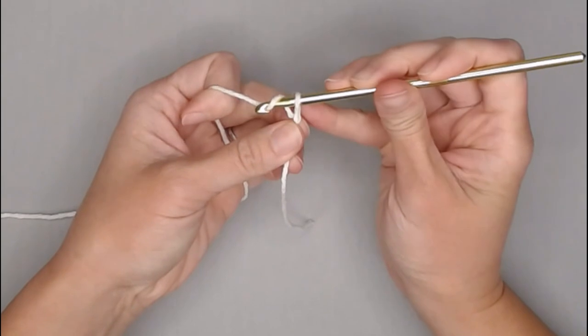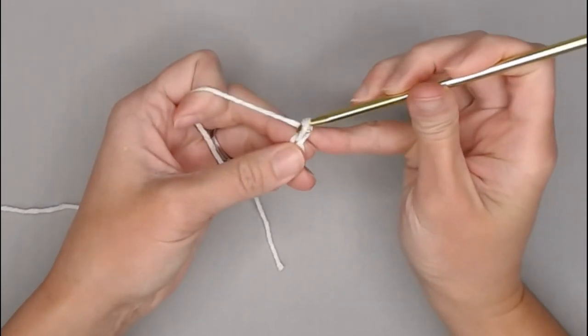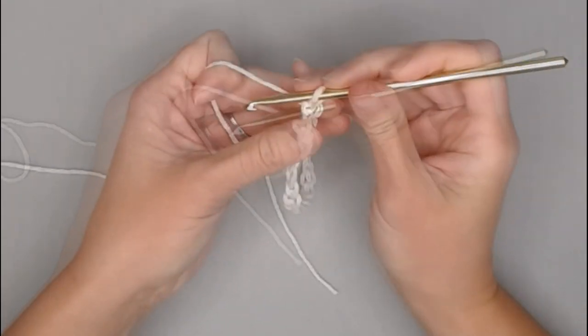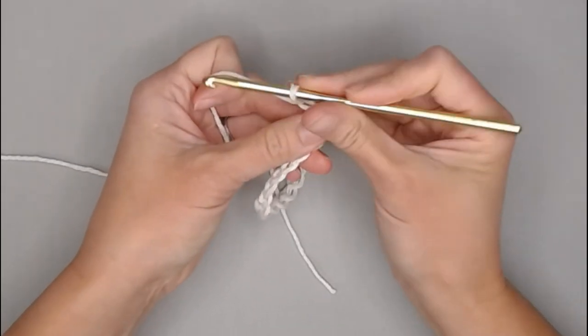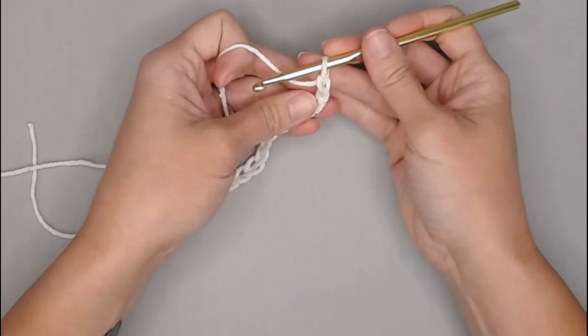So I am going to chain 17 chains. One, two, three, four, fifteen, sixteen, seventeen. Great! We are ready for row one of our patterns.